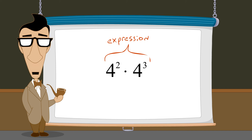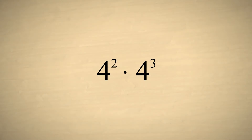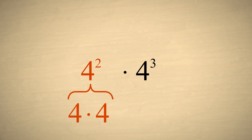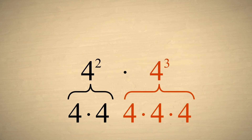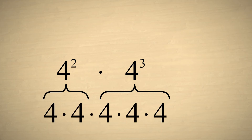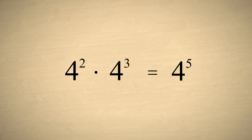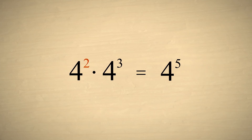We sometimes refer to these individual elements within a larger mathematical expression as terms. Interesting things happen when we multiply exponential expressions together. For example, say that we multiply four-squared times four-cubed. Since four-squared is four times four, and four-cubed is four times four times four, the result is five fours multiplied together, which is equivalent to four to the fifth power.